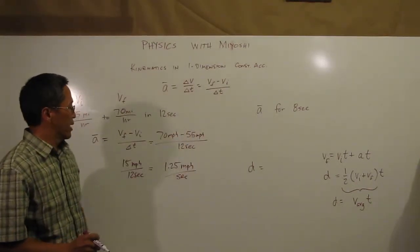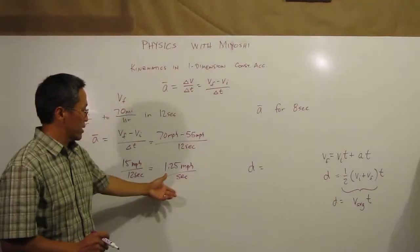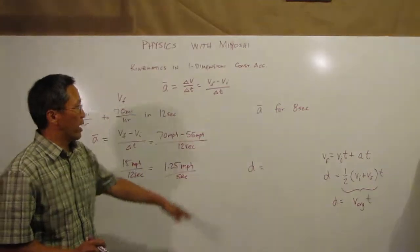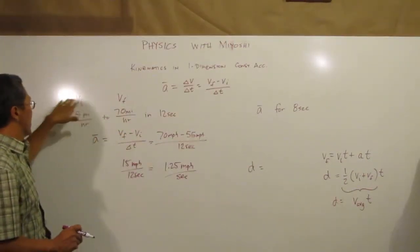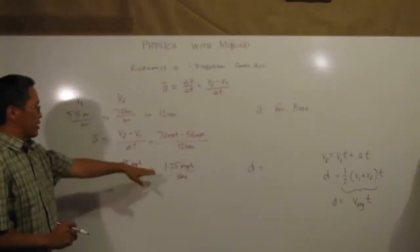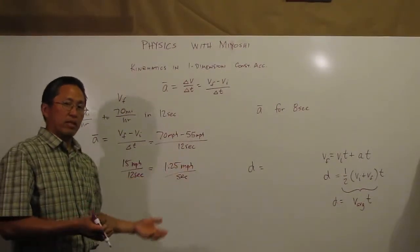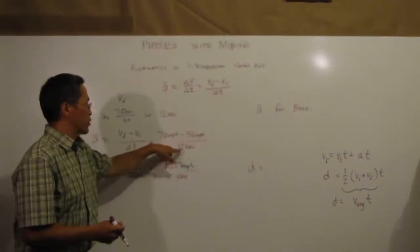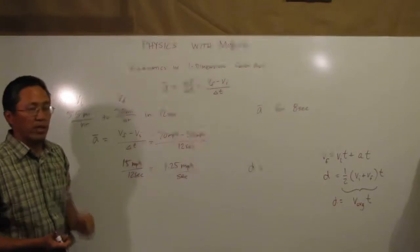So now I'm going from 55 miles per hour. I'm going to use this acceleration that I had here because I can really determine that. And instead of going for 12 seconds though, I want to go for 8 seconds. Well, you can do some ratios and figure that out, but let's just use this same equation.